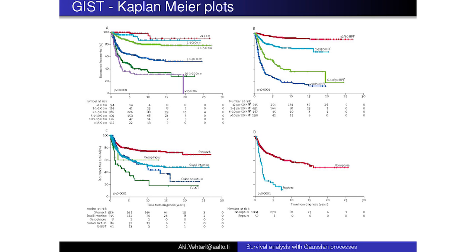This old-fashioned way involves the groups being determined by the researcher — like here, the tumor size, dividing the patients based on tumor size into different discrete groups. So the blue one is from 5 to 10 centimeters. And then plotting these Kaplan-Meier plots. We also have the mitotic count, location of the tumor, and whether the tumor was ruptured.